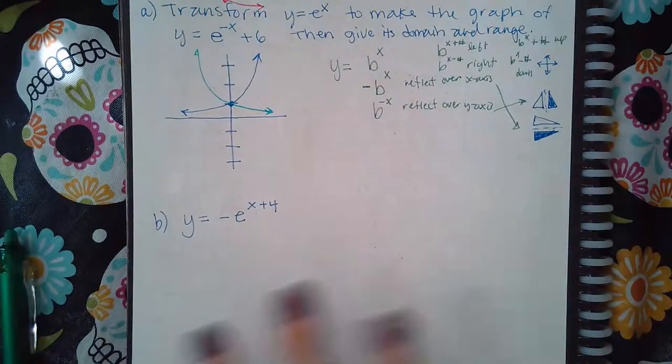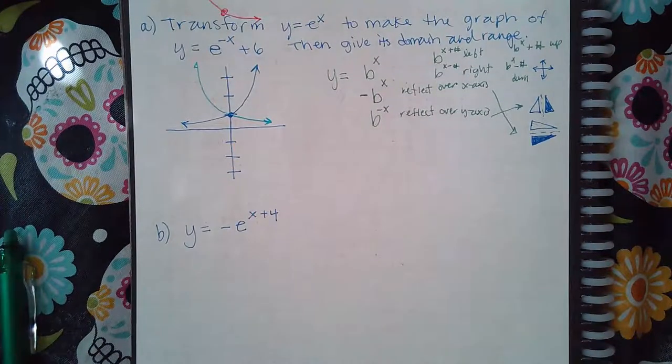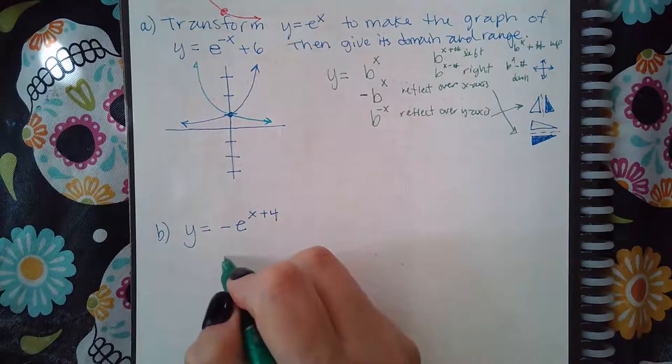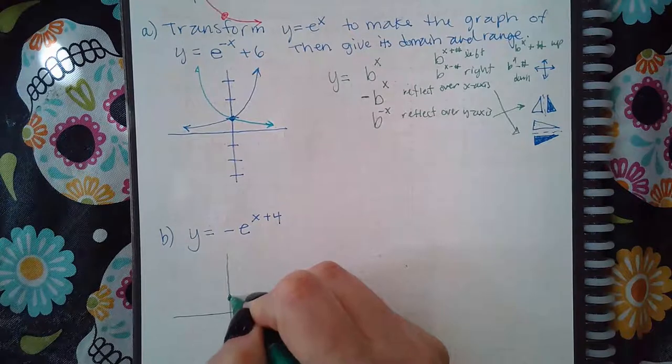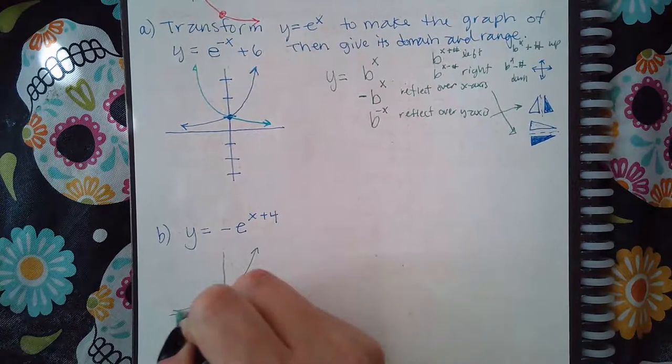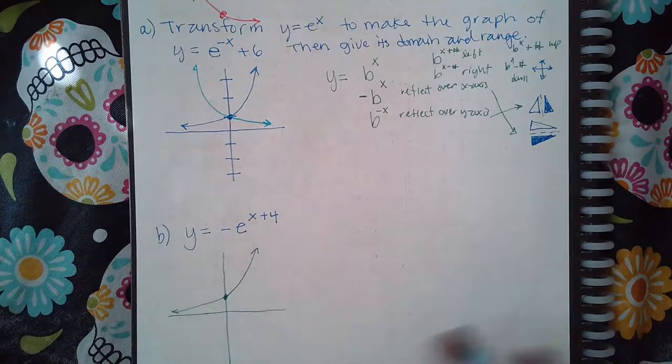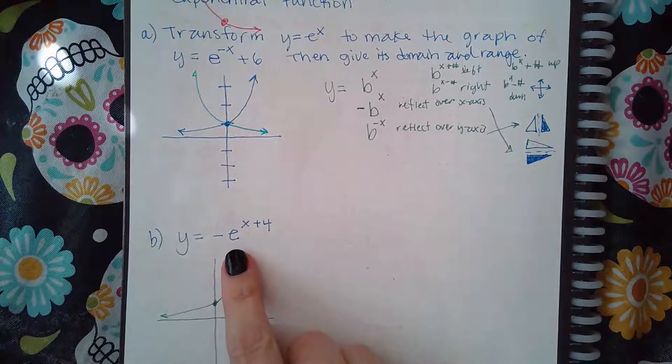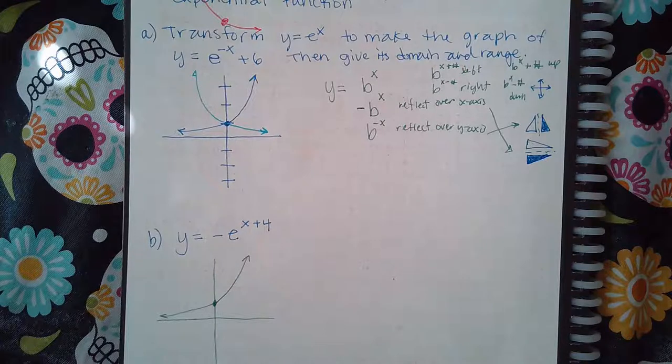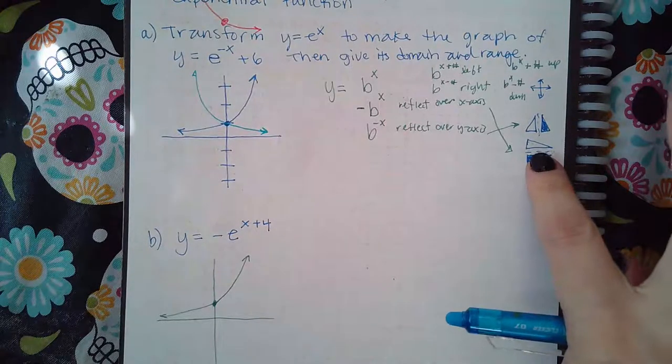So for this one, if I take the basic graph that was given to me, which was e to the x, it looks like this, okay? Then I notice that there's a negative in the front. Because there's a negative in the front, that means it's gonna flip it over the x-axis, which means I need to click on this button.